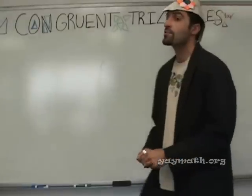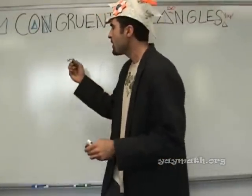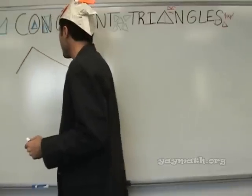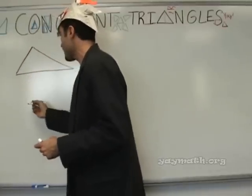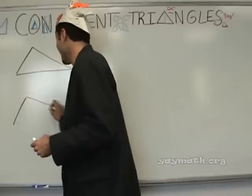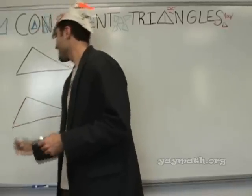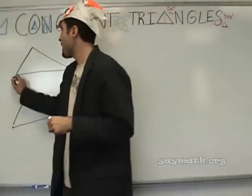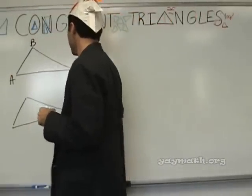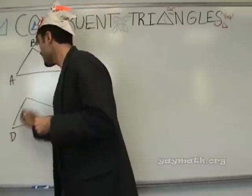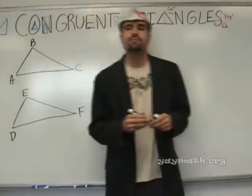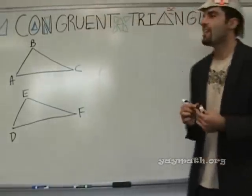Congruent triangles. It goes like this. Let's say I had a triangle, please draw it. It looks like this. A, B, C, D, E, F. A, B, C and D, E, F.